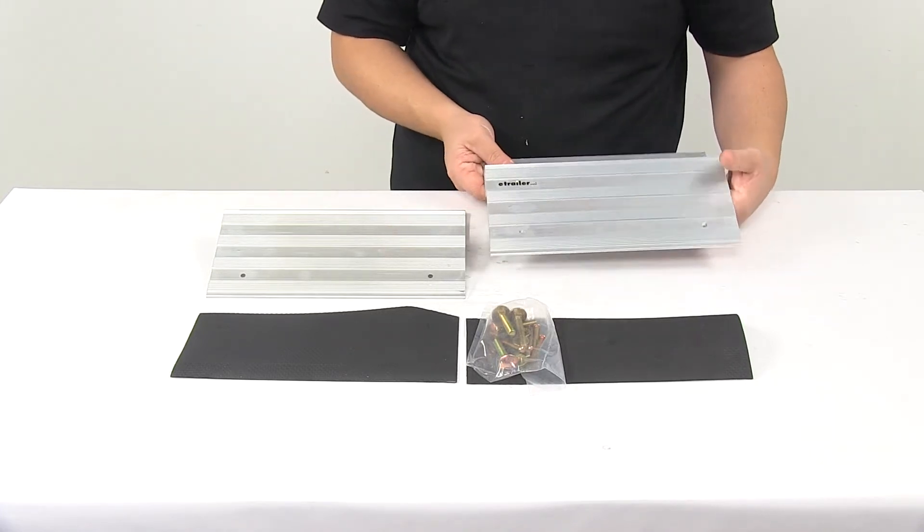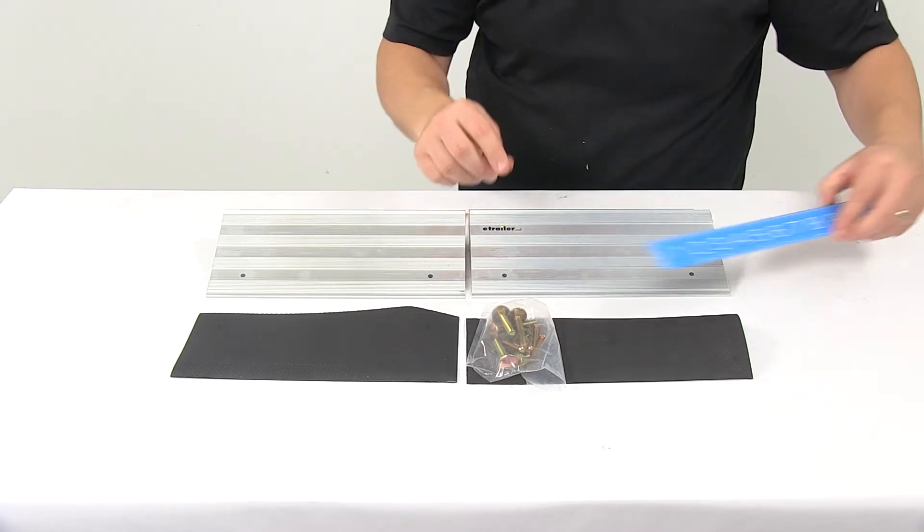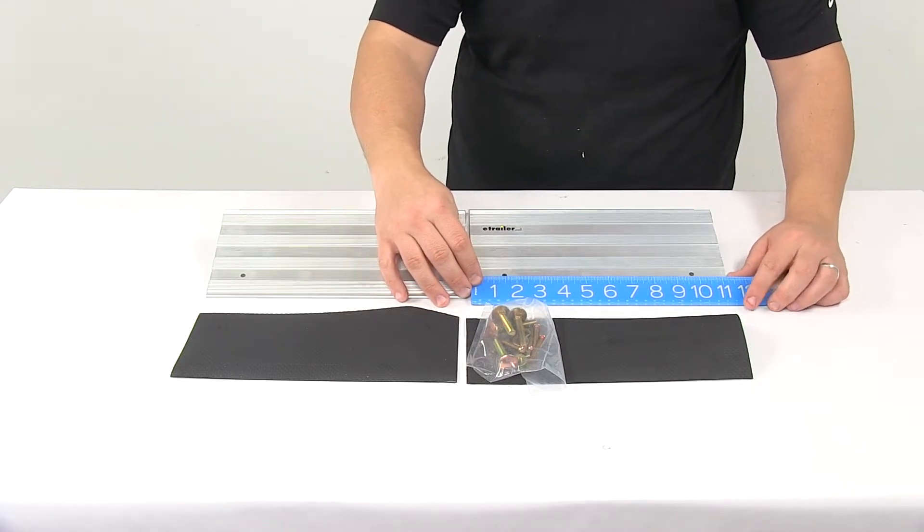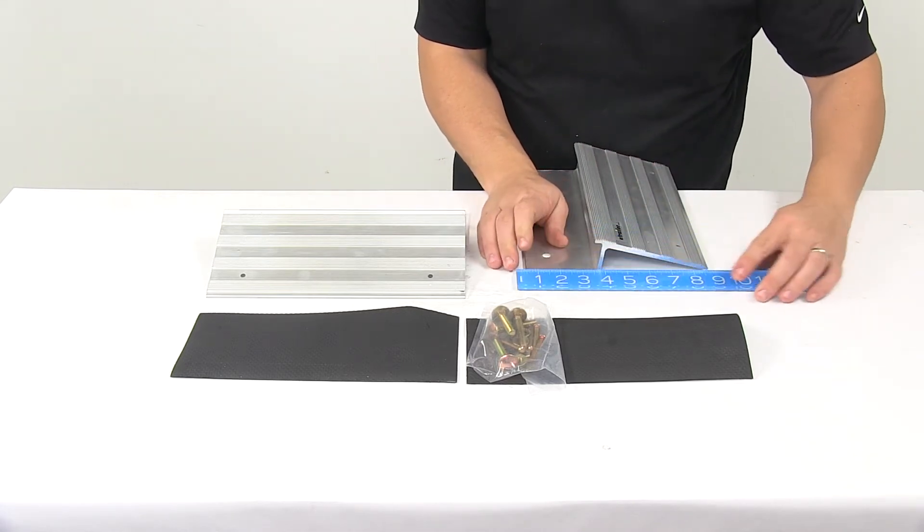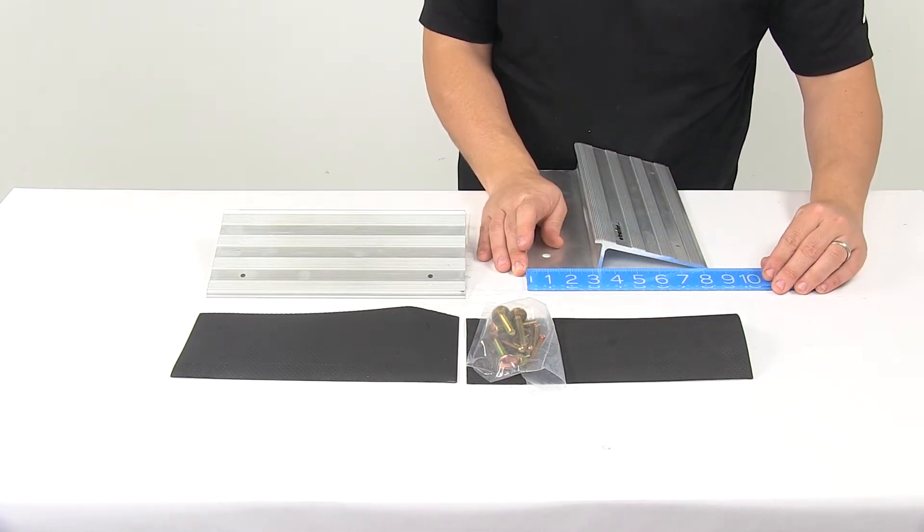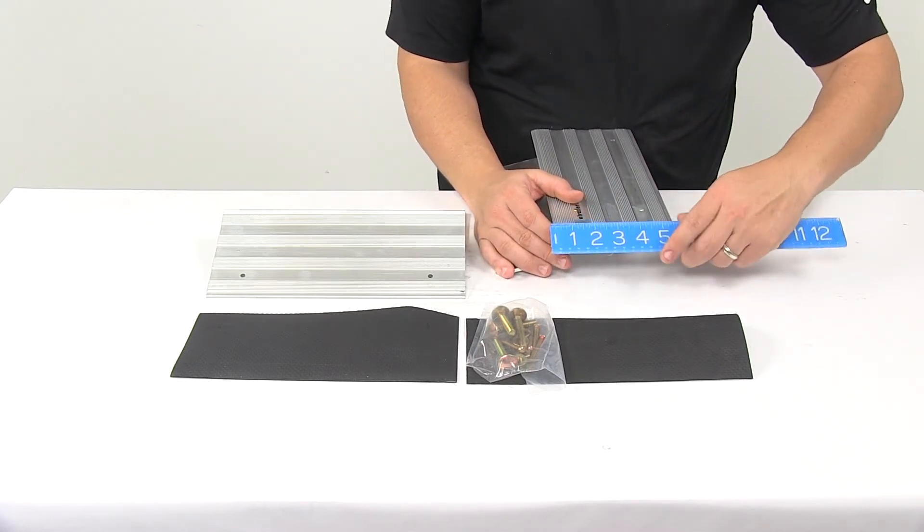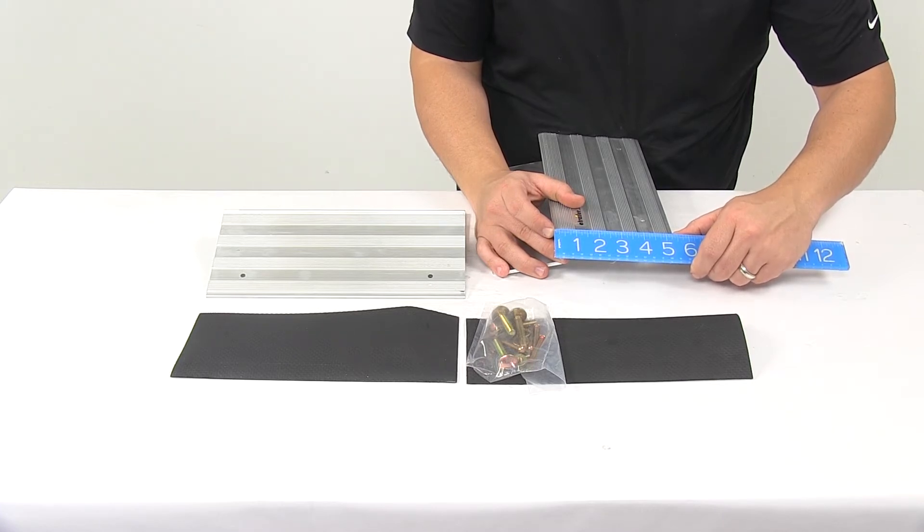Both plates are included and they're the same. Edge to edge, they measure 11 and 1/4 inches. From the very front to the very back measures 8 and 1/4 inches, and the ramp portion measures 5 and 3/8 inches long.